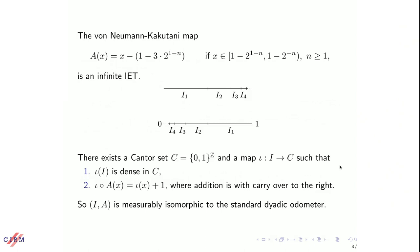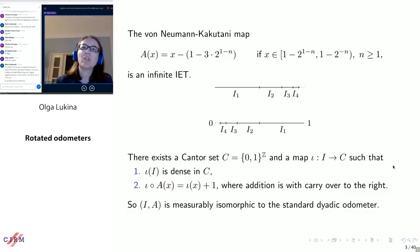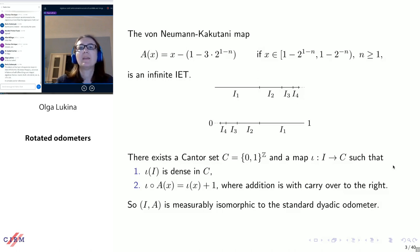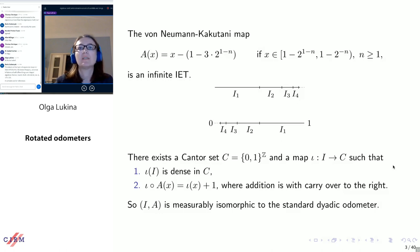Here on the slide I have the formula for the von Neumann-Kakutani map. This is an infinite interval exchange transformation. We have a unit interval, and it is subdivided into smaller subintervals of different lengths. The length of each next subinterval, which is denoted by I1, I2, and so on in my picture, is two times less than the length of the previous one. The picture shows how the von Neumann-Kakutani map rearranges these intervals within the unit interval.